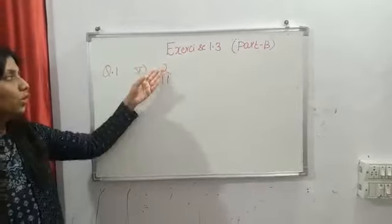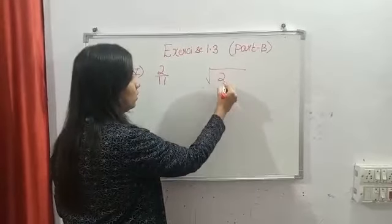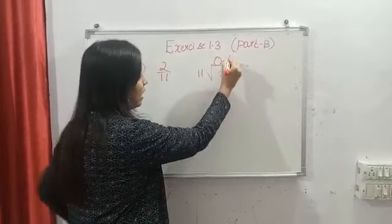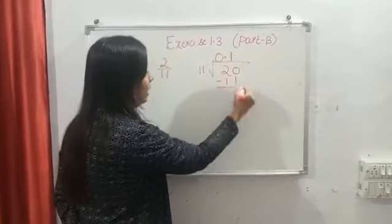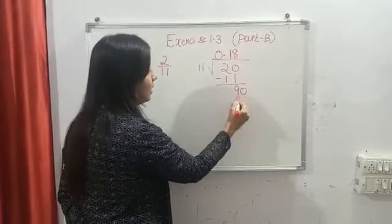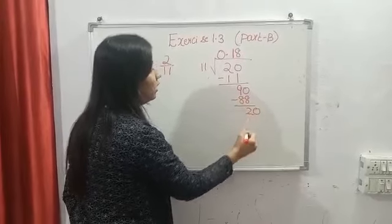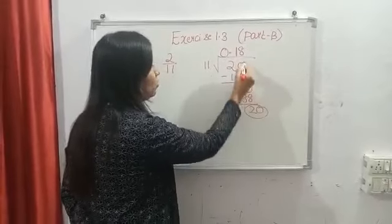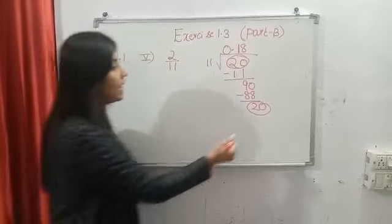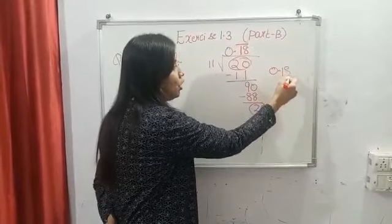The next one is 2 divided by 11, fifth part. Here we are having 2 and here we are having 11. First we will put zero here. 11 times 1 is 11, 20 minus 11 is 9. Again you will put zero here. 11 times 8 is 88, 90 minus 88 is 2. Again you will put zero here, so again you are getting the same 20 which you started with in the first step. It means 1, 8 will repeat continuously.